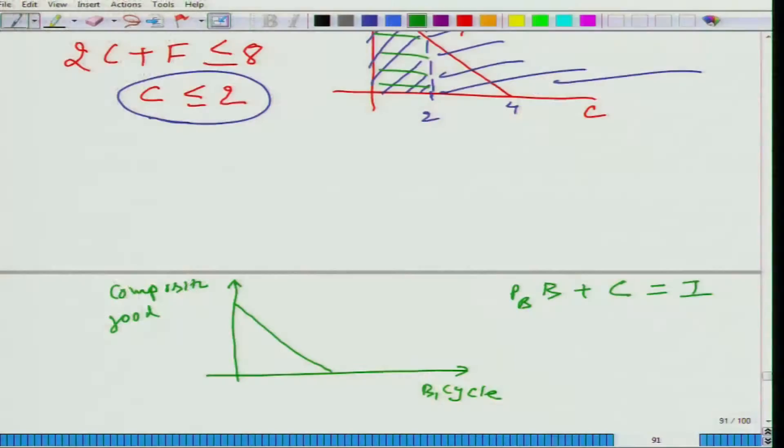So, let's say government gives unit subsidy on bicycle. What would be the new budget set and the new budget line? Rotation outwards. So, tell me the equation - what will happen here? PB minus S, PB minus S into B, B plus C equals to I. And it implements what we have to do - there will be anticlockwise rotation. This is one way to do it.